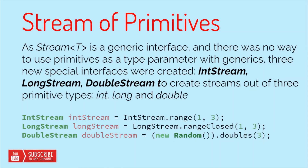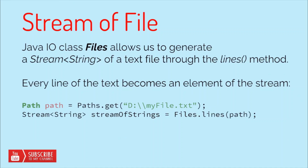Since Stream is a generic interface, there was no way to use primitives as type parameters with generics — we could only use wrapper objects like Integer or Long. To accommodate primitive data types, three special interfaces were created: IntStream, LongStream, and DoubleStream. These are used to create streams of primitive types int, long, and double respectively. For example, IntStream.range(1, 3) — note that the ending range is exclusive. Similar logic applies to LongStream and DoubleStream.